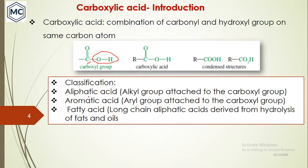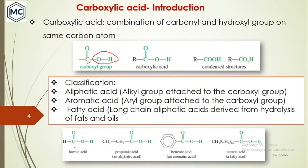Carboxylic acids can be classified into: aliphatic acid, where an alkyl group is attached to the carboxyl group; aromatic acid, where an aryl group is attached; and fatty acid, where a long-chain aliphatic acid is derived from hydrolysis of fats and oils. For example, formic acid is the smallest carboxylic acid; propionic acid is an aliphatic acid; benzoic acid is an aromatic acid; and stearic acid, with a chain of 16 carbons, is a fatty acid derived from hydrolysis of fats and oils.